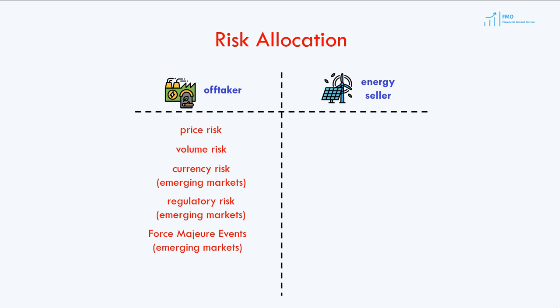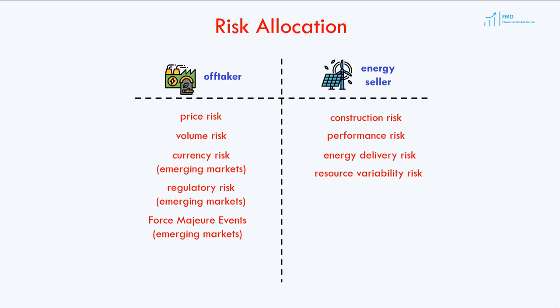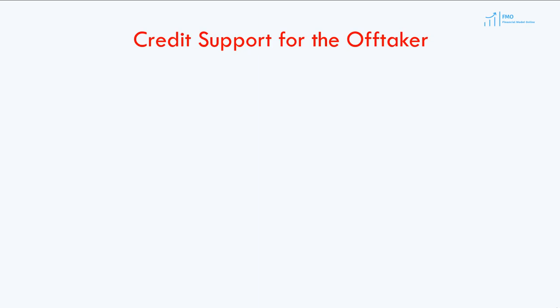When it comes to the risks allocated to the energy seller, they include risks associated with construction, operation performance, energy delivery risk, and resource variability risk. Since both the off-taker and the energy seller take on significant risk under the PPA, each party wants the other to be creditworthy. Typically, in developed markets, the off-taker is an investment-grade utility, which is sufficient to mitigate the counterparty risk.